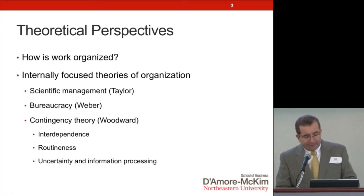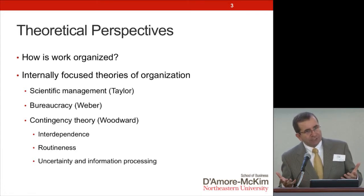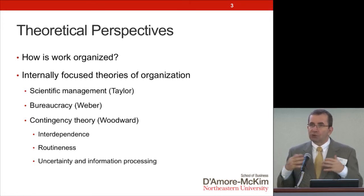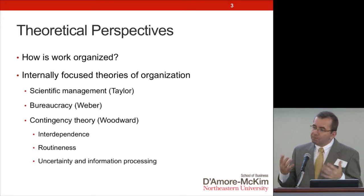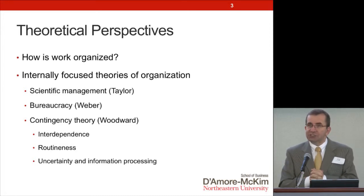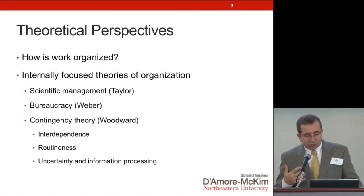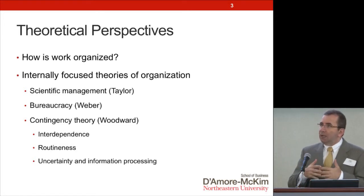After that, the question became: if bureaucracy is the best form of organization, why aren't all companies organized as bureaucracies? Then came contingency theory, which said there is no one best form of organization — people can organize in different ways depending on the situation. The early theories identified three main drivers of organizational form, one of which is information. So the early organizational theories focused on an information processing perspective to explain why organizations are the way they are.